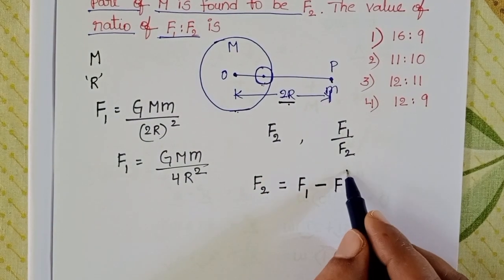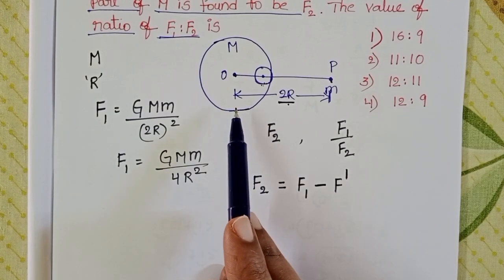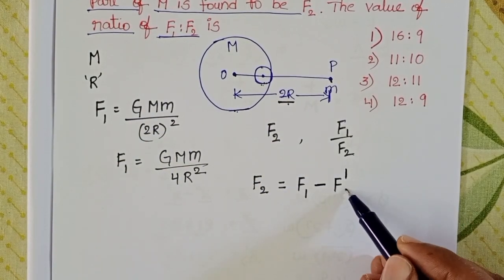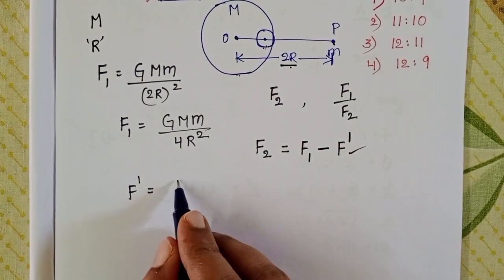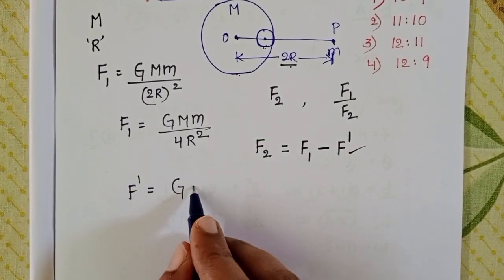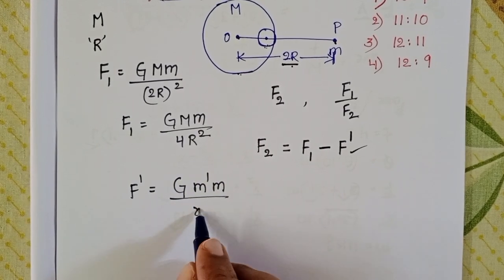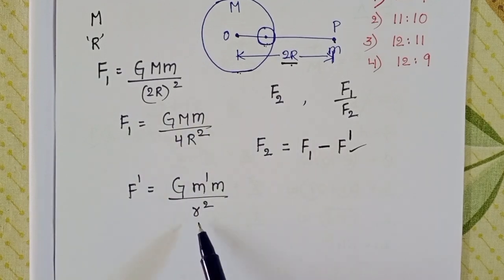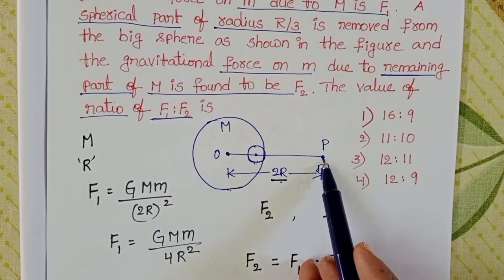Let the force due to the removed small sphere be F_dash. F_dash equals G·M' × m / r², where M' is the mass of the small sphere and r is the distance of separation between the small sphere and the point mass.